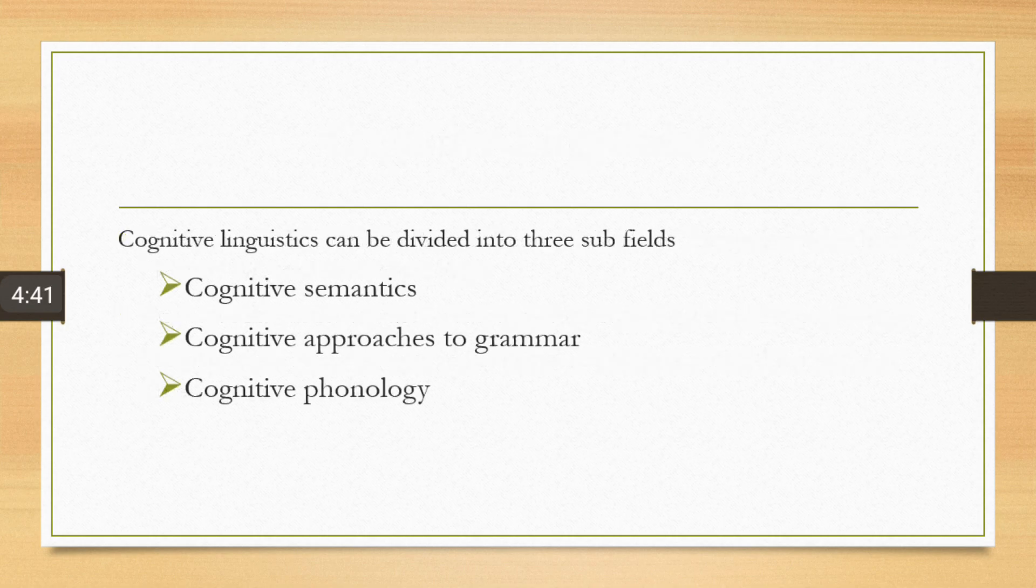Cognitive linguistics can be divided into three subfields: cognitive semantics, cognitive approaches to grammar, and cognitive phonology.